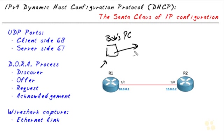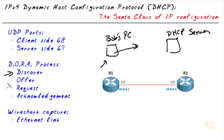The first step of a traditional DHCP process is Bob sending out a discover packet, which is a broadcast sent to everybody inside that VLAN. If there is a DHCP server or some device acting as a DHCP server, the DHCP server can send an offer back to Bob.